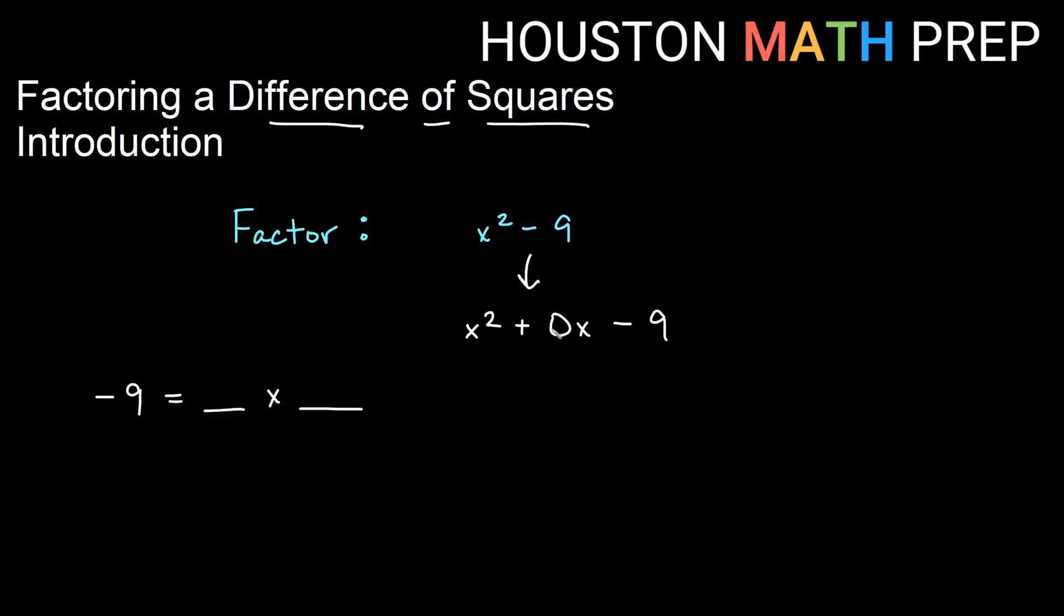And we want numbers that multiply to give us negative 9. And remember they need to add to give us b. And in this case, because we had no b term to begin with, same as no x's, b is really zero here. So we want numbers that multiply to give us negative 9 and add to give us zero. And it turns out if you think for a minute and look at this, you will get that the numbers are 3 and negative 3.